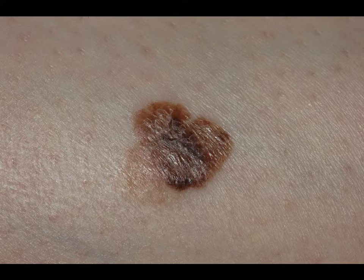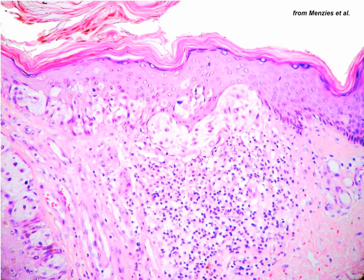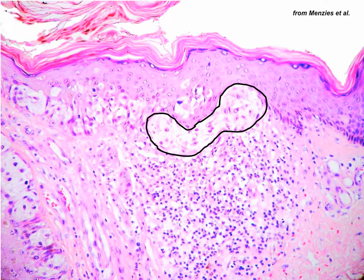Another case of a melanoma: dermoscopically, we see light brown color with variable shades, irregular pigment network, irregular dots and globules. But if we focus on the lower part, we see at 6 o'clock a multitude of pseudopods. At higher power, we can appreciate them even better. This is the histopathological correlation courtesy of Professor Menzies from Sydney. What you see is these horizontal confluent nests of atypical melanocytes situated at the dermoepidermal junction, and towards the periphery, a larger nest corresponding to the knob of the pseudopod.